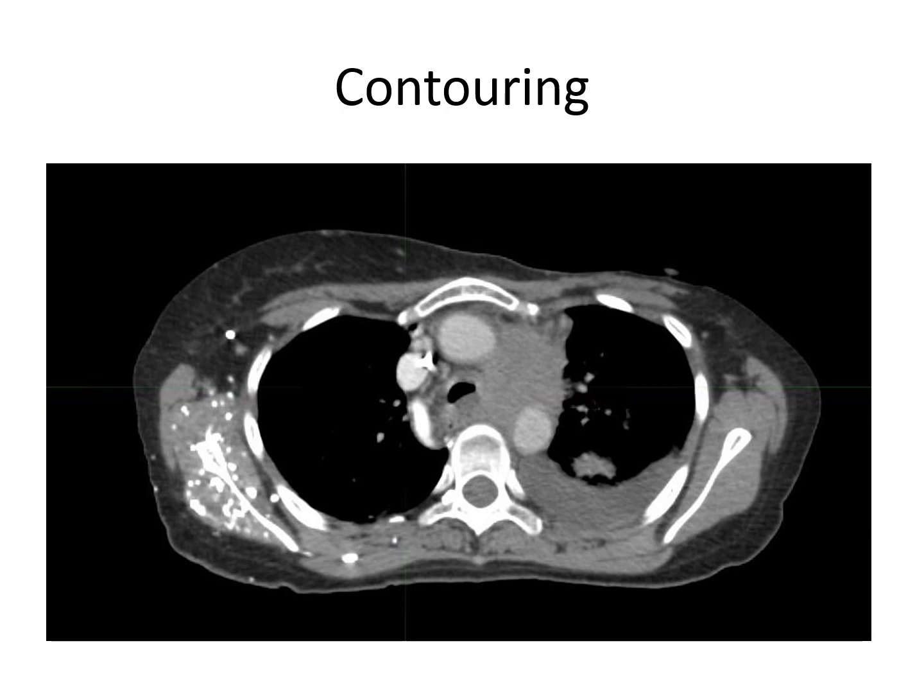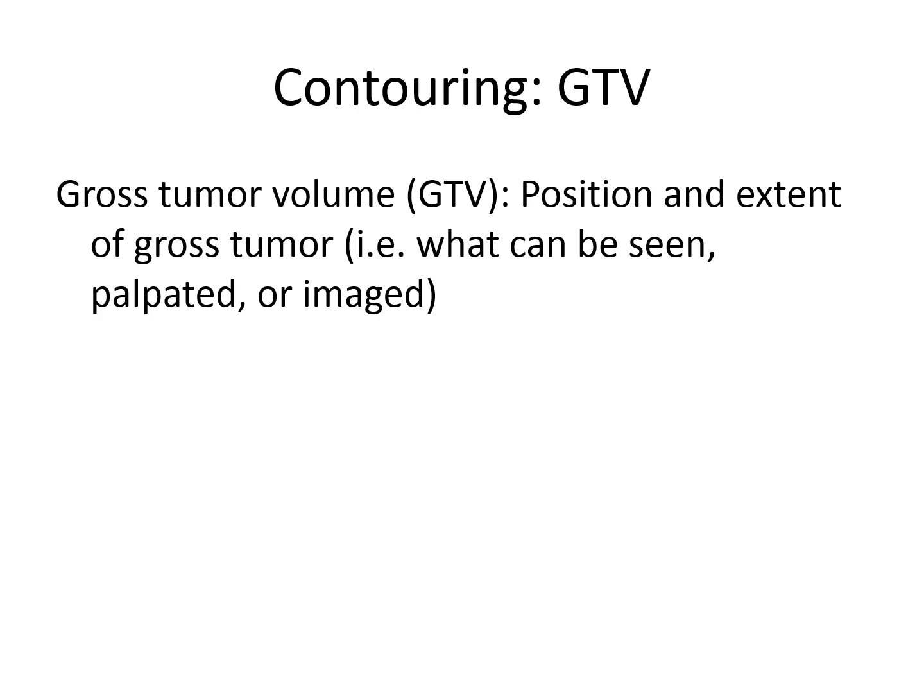Take a moment to observe this image obtained slightly inferior to the prior slice, and consider where the confines of the mediastinal mass are. If your computer is equipped, use a felt tip or highlighter pen from the PowerPoint slide to draw where you think the borders of the gross tumor are. This is the GTV, or gross tumor volume, which is the position and extent of gross tumor that can be seen, palpated, or imaged for a given patient.